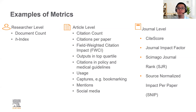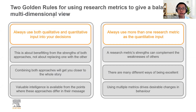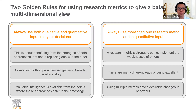On a journal level, we have CiteScore, we have SCImago Journal Ranking, and Source Normalized Impact Per Paper. I also mention Journal Impact Factor because it may be a metric most of you are more familiar and comfortable with, but it's not the only metric and it's not a metric we have on Scopus. Two golden rules when it comes to Scopus: always use both qualitative and quantitative inputs and outputs in your decision, and always use more than one research metric as the quantitative input.